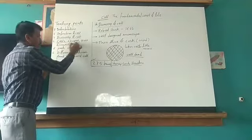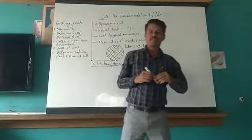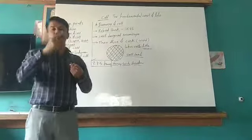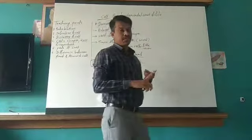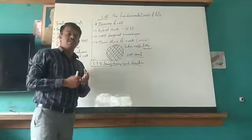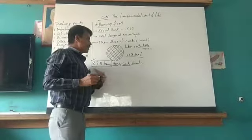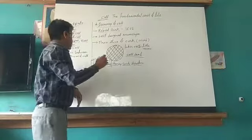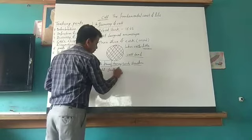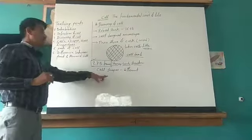We will discuss cell sizes and numbers. In the human body, RBC cells are there — their shape is disc-shaped. Again, nerve cells are thread-like or wire-like in structure. Muscle cells are spindle-shaped. So each and every location of the human body, on the basis of their functions, their shapes are different.